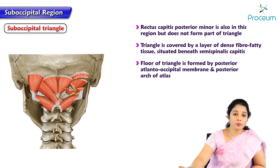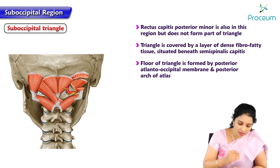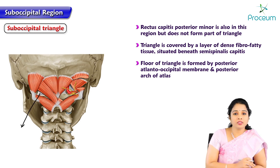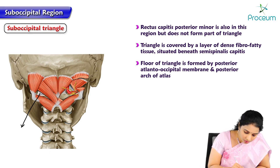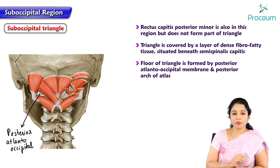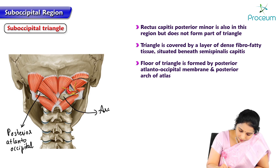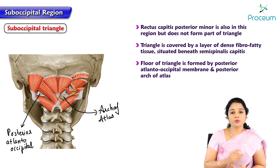The floor of the triangle is formed by the posterior atlanto-occipital membrane. This white colored membrane, over which you can see an artery — that is the vertebral artery — is the posterior atlanto-occipital membrane. The posterior arch of the atlas is also visible here; part of the rectus capitis posterior major is cut and removed to expose the arch of the atlas. These two structures form the floor of the triangle.